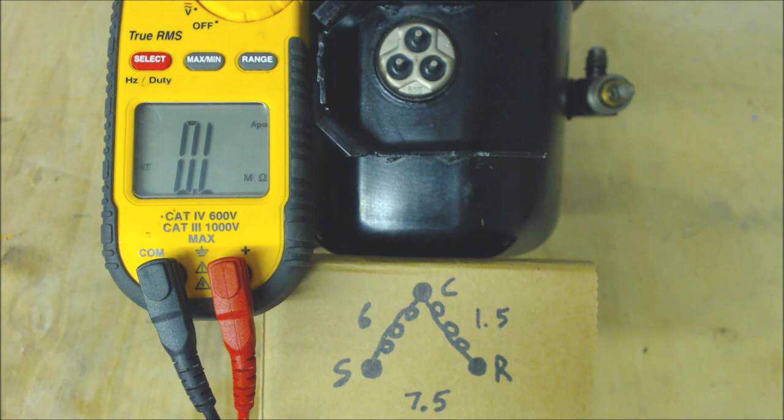And now we're going to check the windings against the ground just to make sure that there's no short. Typically when you have these resistance readings matching up there is no short to ground but you definitely go ahead and check.